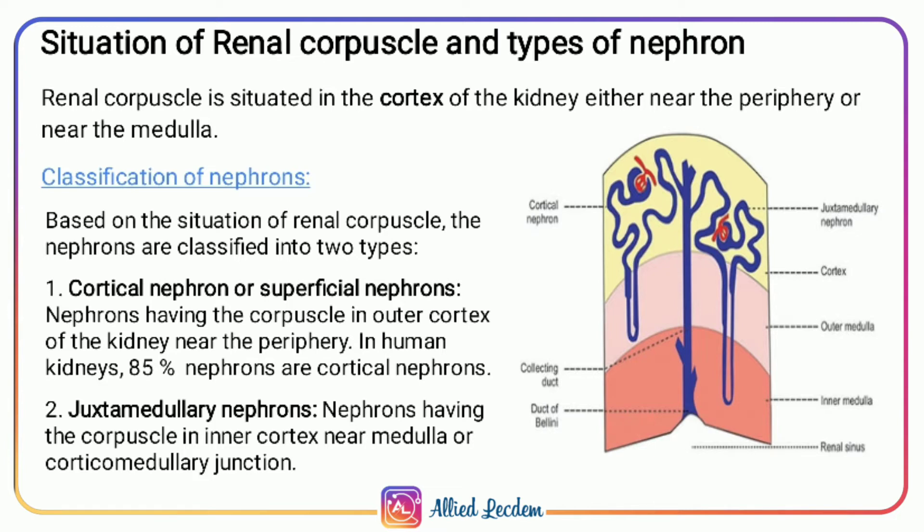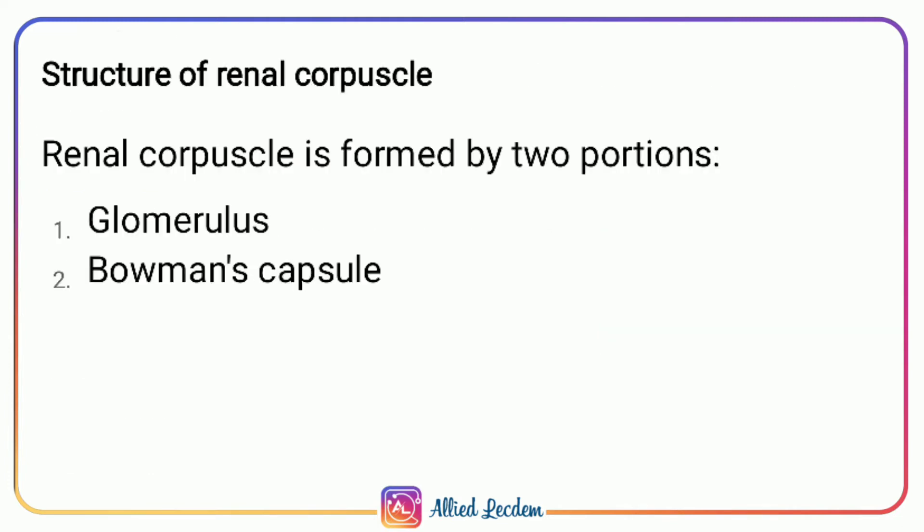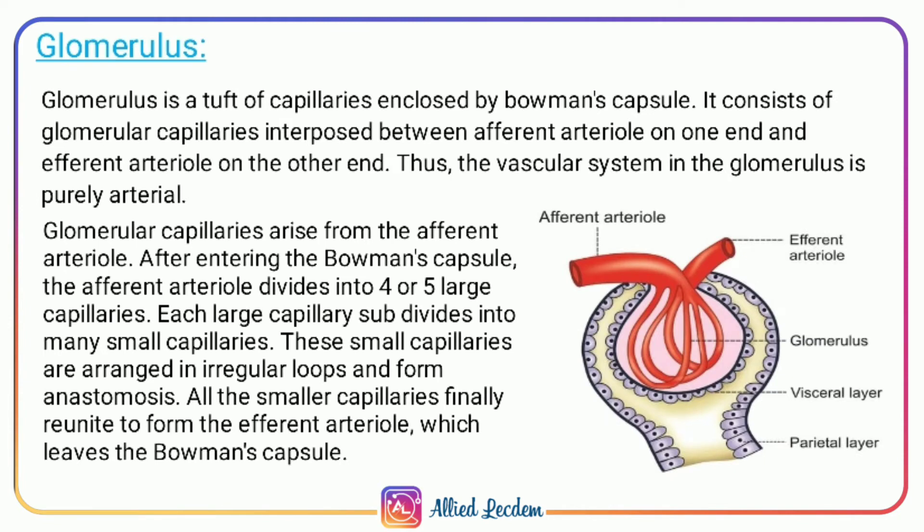The renal corpuscles present in the inner cortex of the kidney near the medulla are called juxtamedullary nephrons. The structures which form the renal corpuscle are the glomerulus and Bowman's capsule.